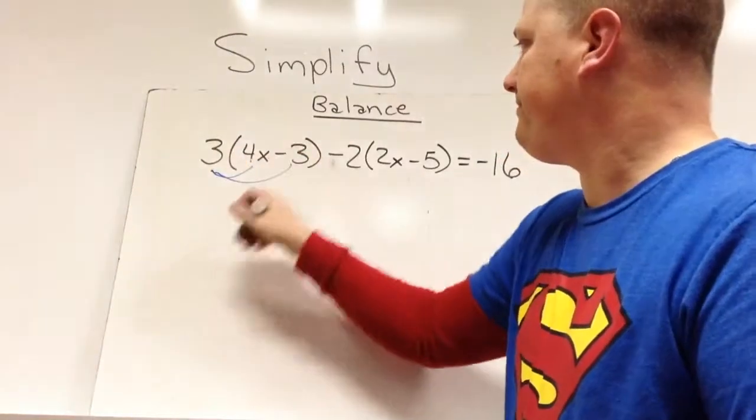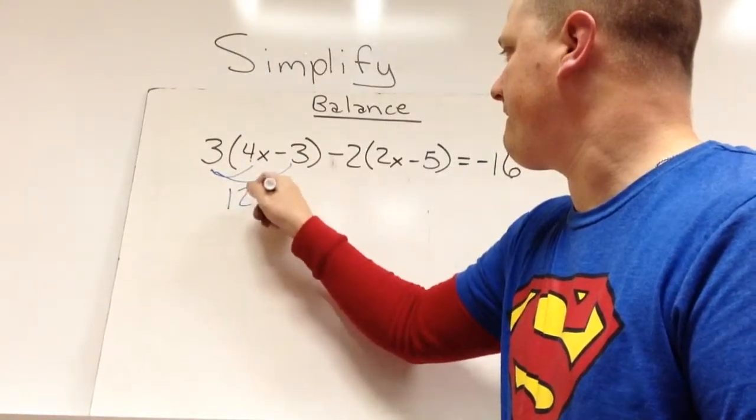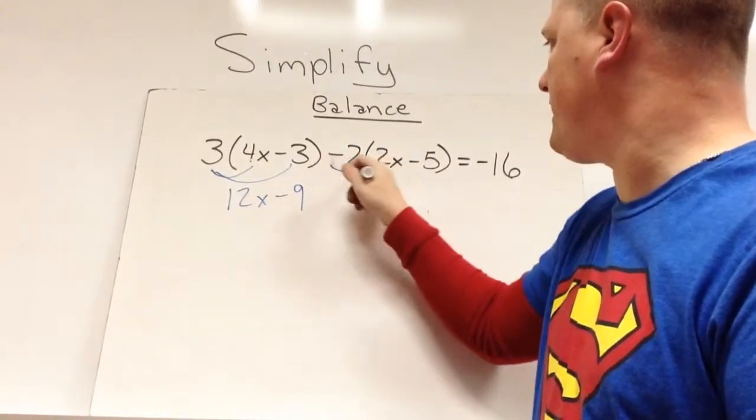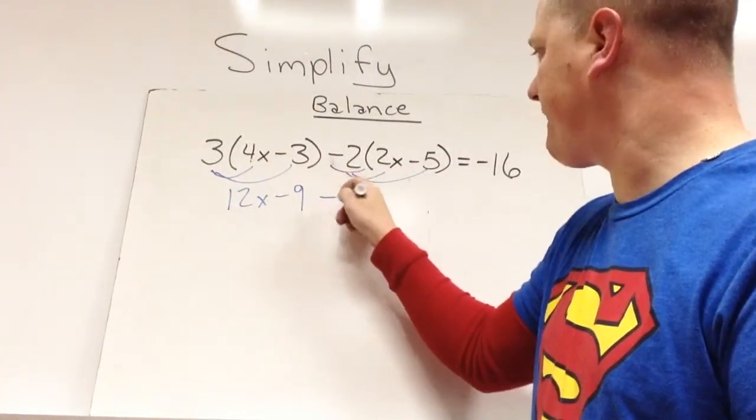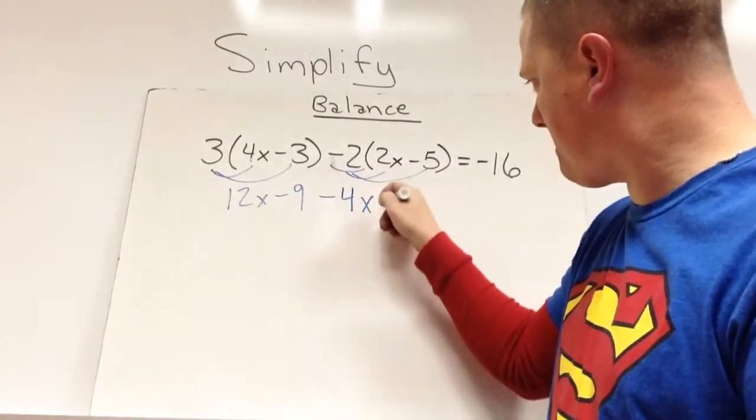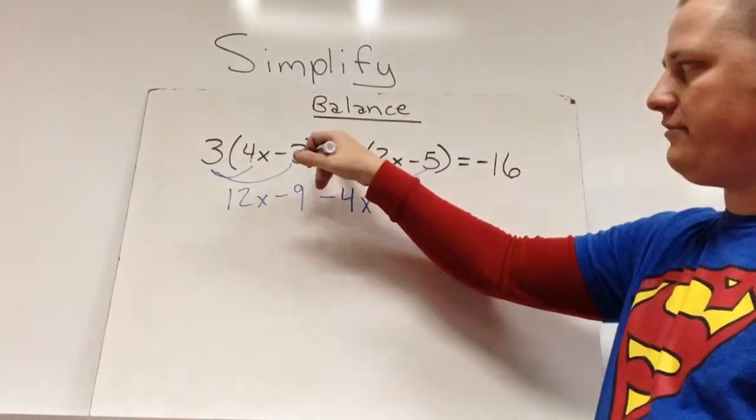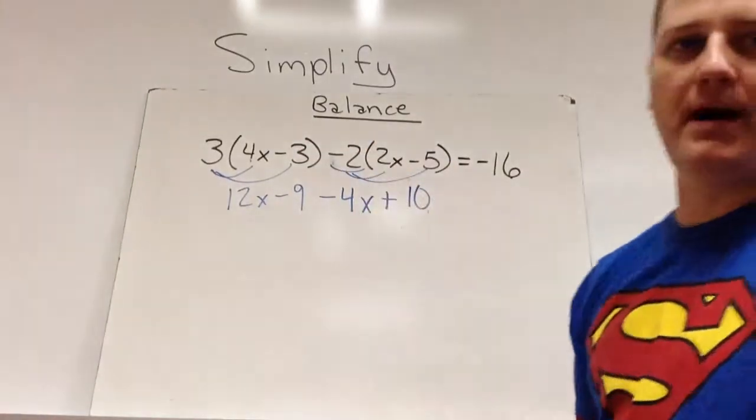So we want to distribute. Now we've got to distribute negative 2. Be very careful here, negative 2 and negative 5 make positive 10 there.